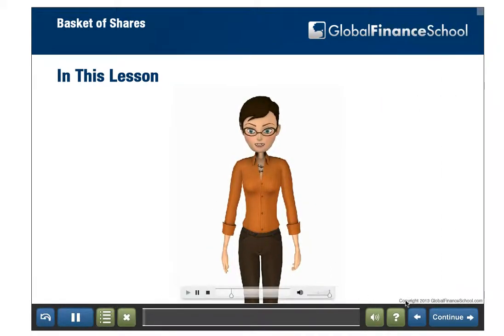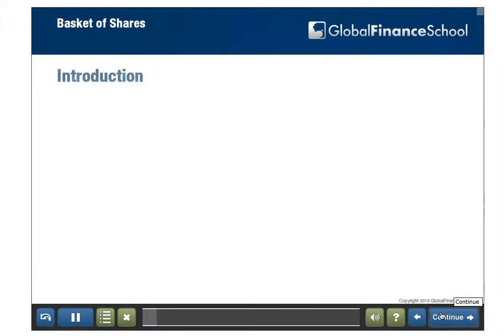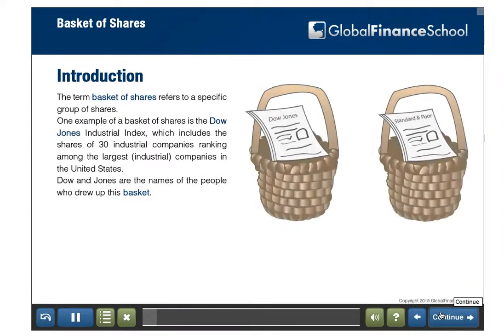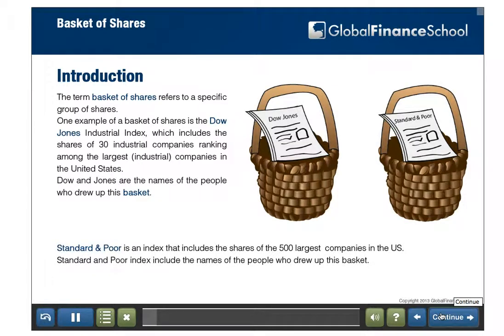Introduction. The term basket of shares refers to a specific group of shares. One example of a basket of shares is the Dow Jones Industrial Index, which includes the shares of 30 industrial companies ranking among the largest industrial companies.